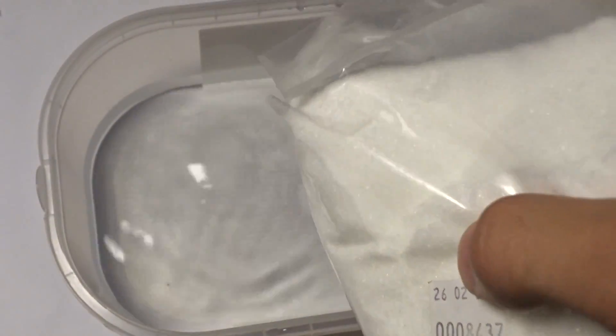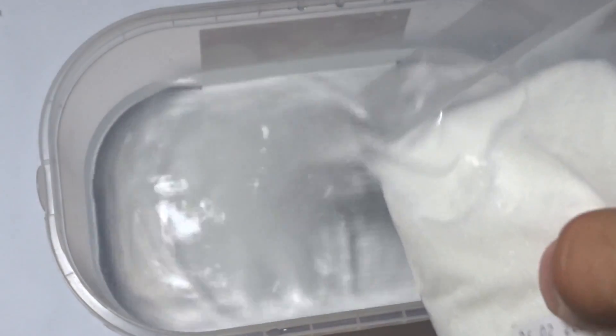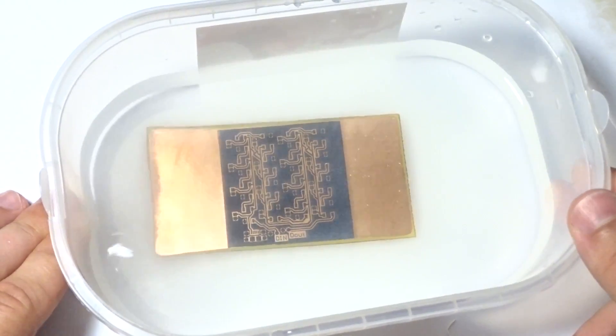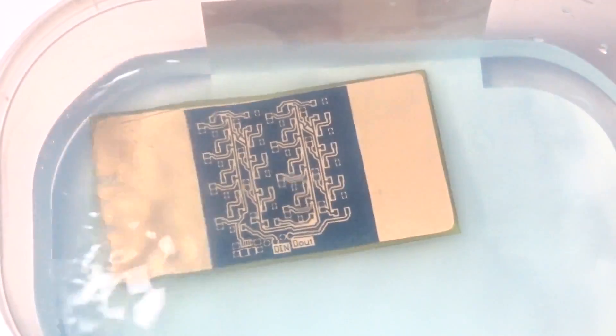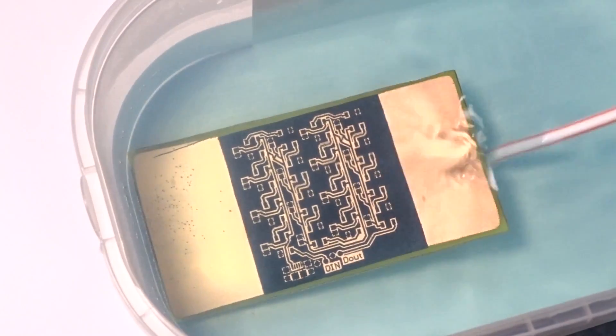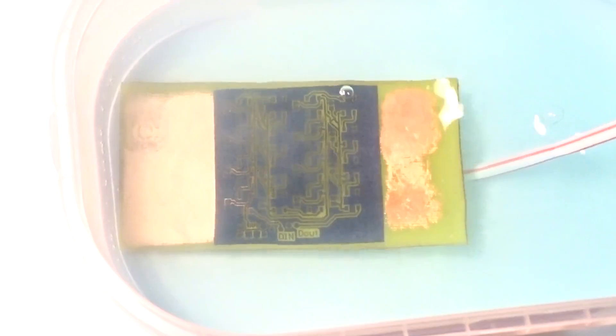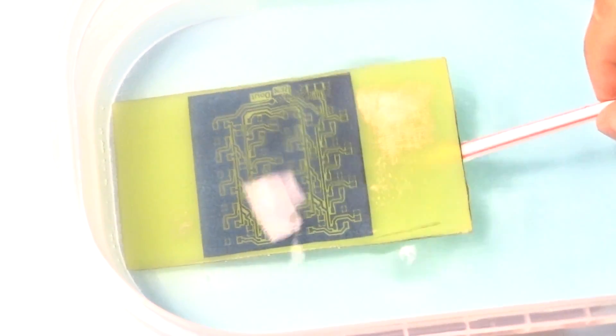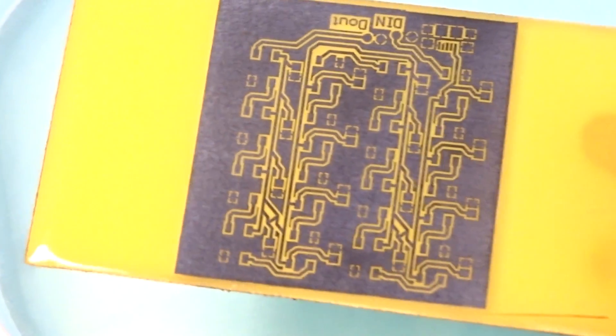I used sodium persulfate solution with warm water to etch the copper because it's cheaper and not so dangerous to work with. You could also use ferric chloride in this case but be careful. Working with chemicals, have all the protection that you need: gloves, glasses, mask respirator and so on. Moving the container with the etching solution helps to speed up the process and in the end we end up with perfectly etched copper traces.